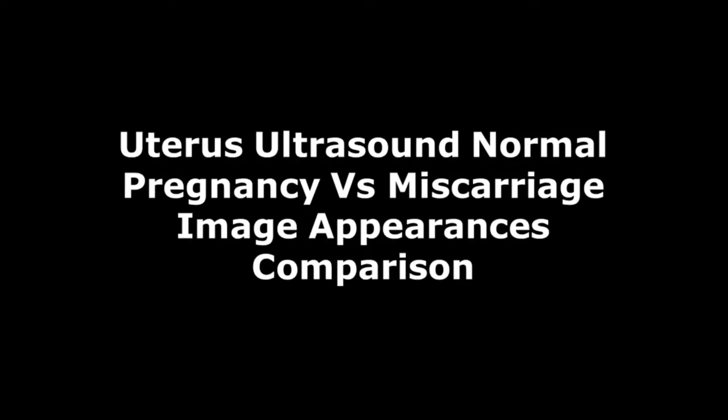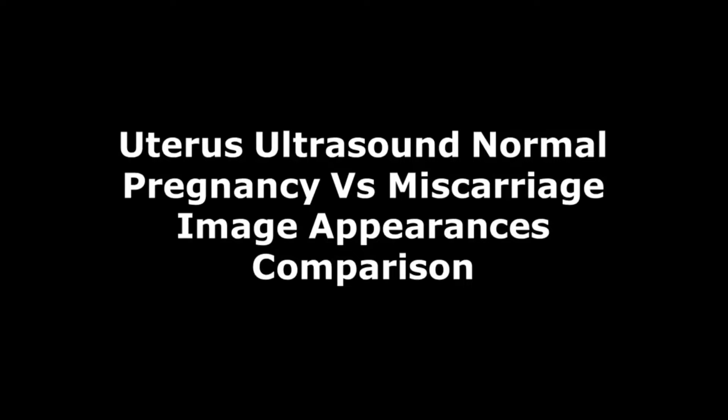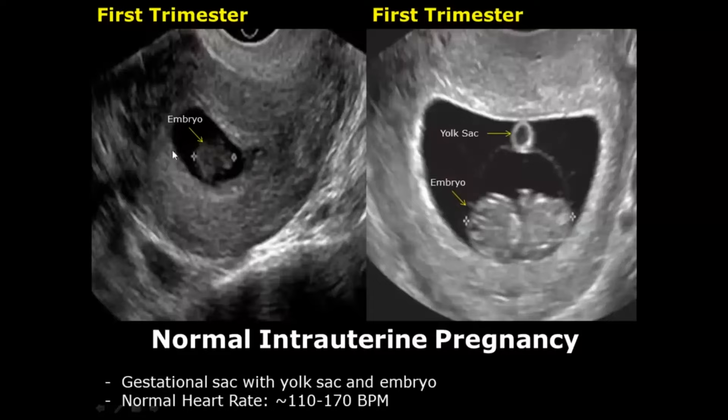Hello everyone, this is Dr. Sam and today we will differentiate between normal pregnancy and a miscarriage. A normal intrauterine pregnancy consists of a gestational sac containing a yolk sac.